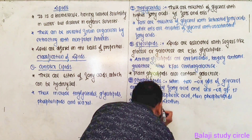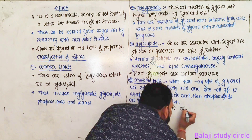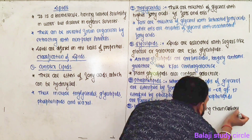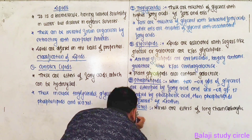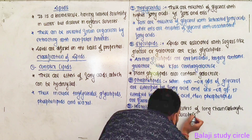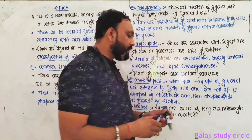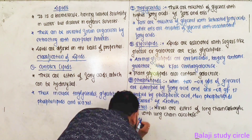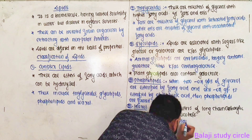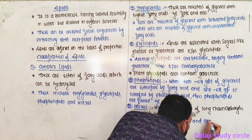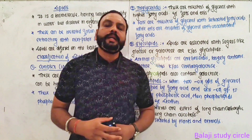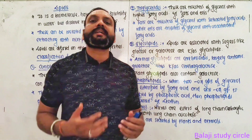Waxes are esters of long-chain carboxylic acids with long-chain alcohols. These are secreted by both plants and animals. That was all about the introduction to lipids and complex lipids.